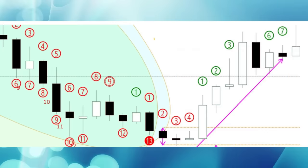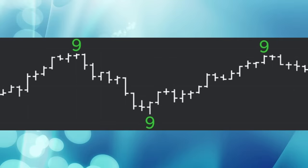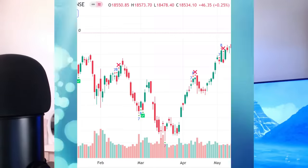The number shows how many consecutive sessions in a row the stock or index has closed above or below the price four days ago. The more the number, the more the oversold or overbought condition. The most important number the indicator looks for is the number nine.